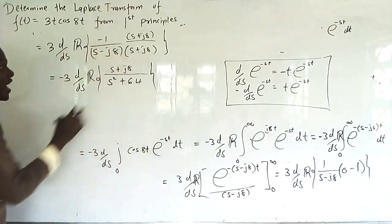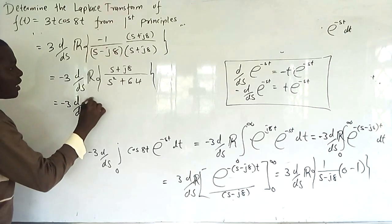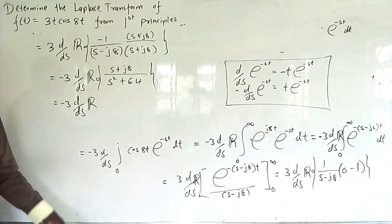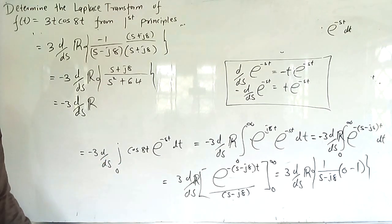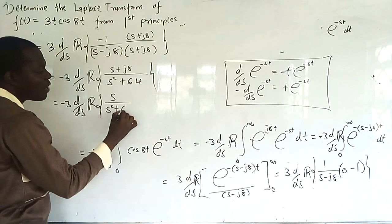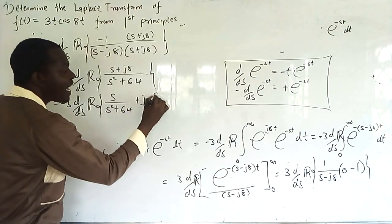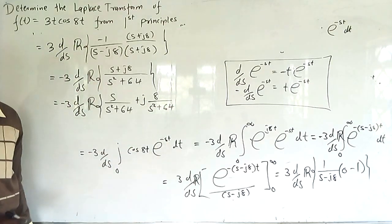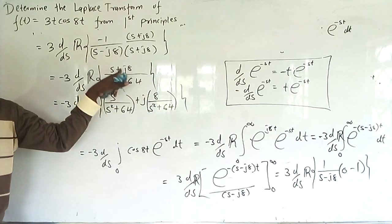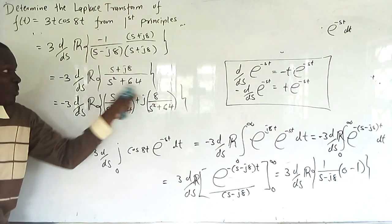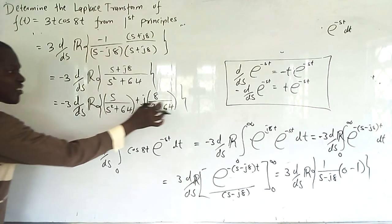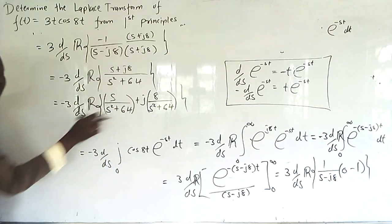Now separate the real from the imaginary parts: (s + j8)/(s² + 64) = s/(s² + 64) + j·8/(s² + 64). The real part is the term without j, which is s/(s² + 64), and the imaginary part is 8/(s² + 64). We are only interested in the real part.